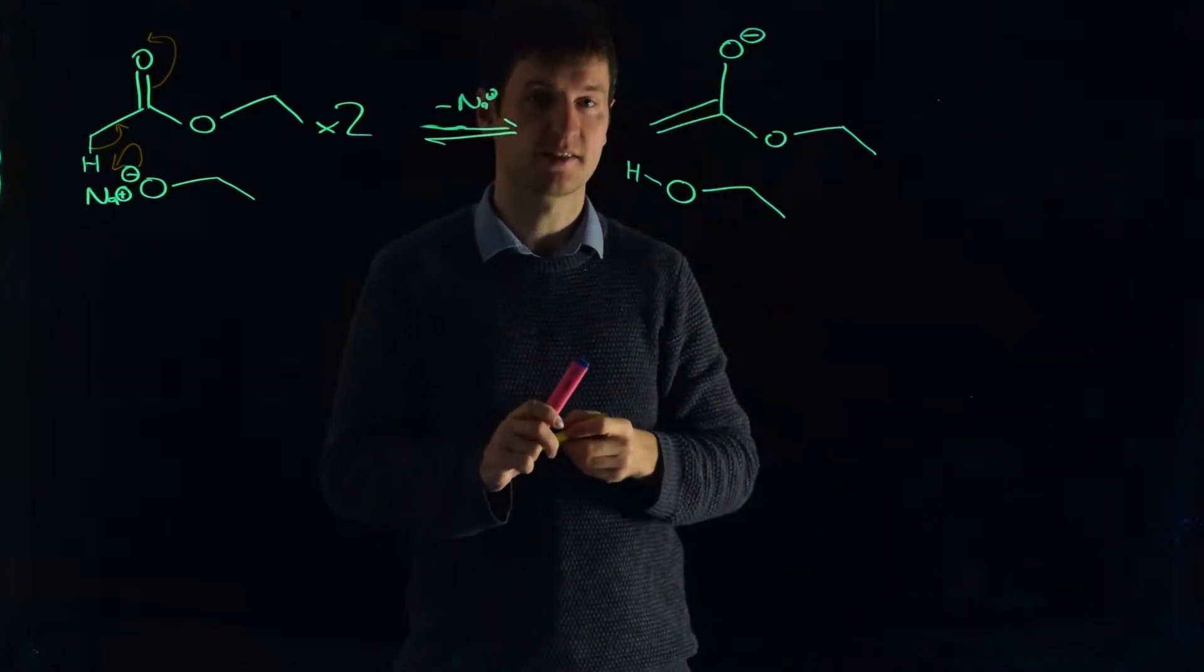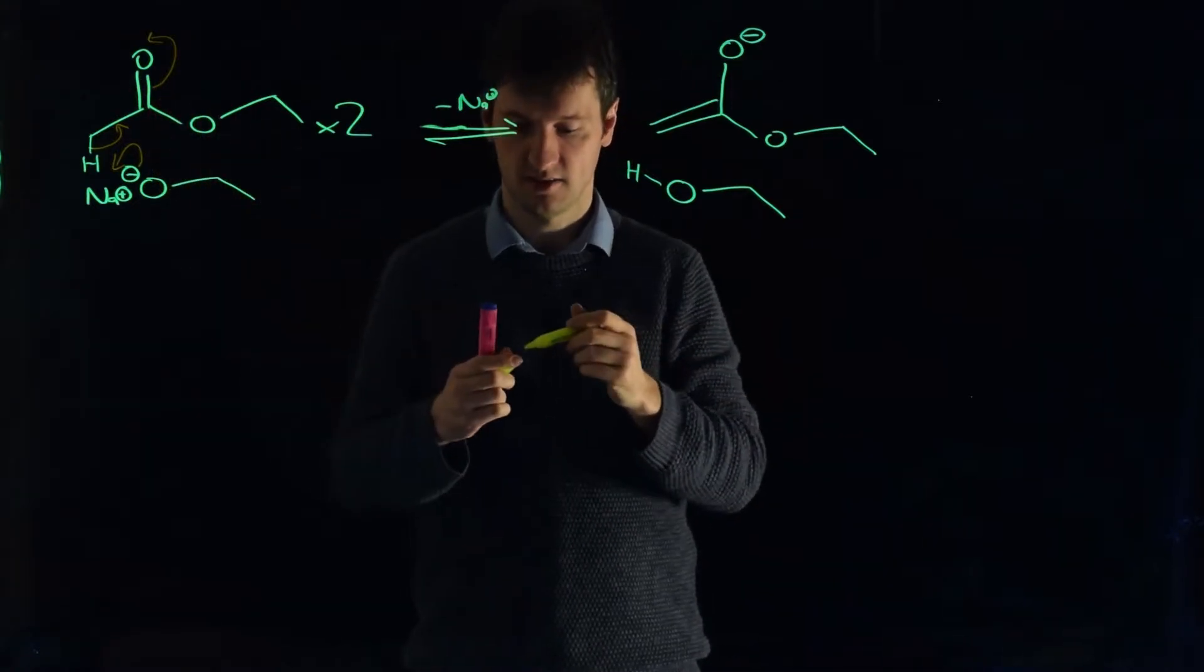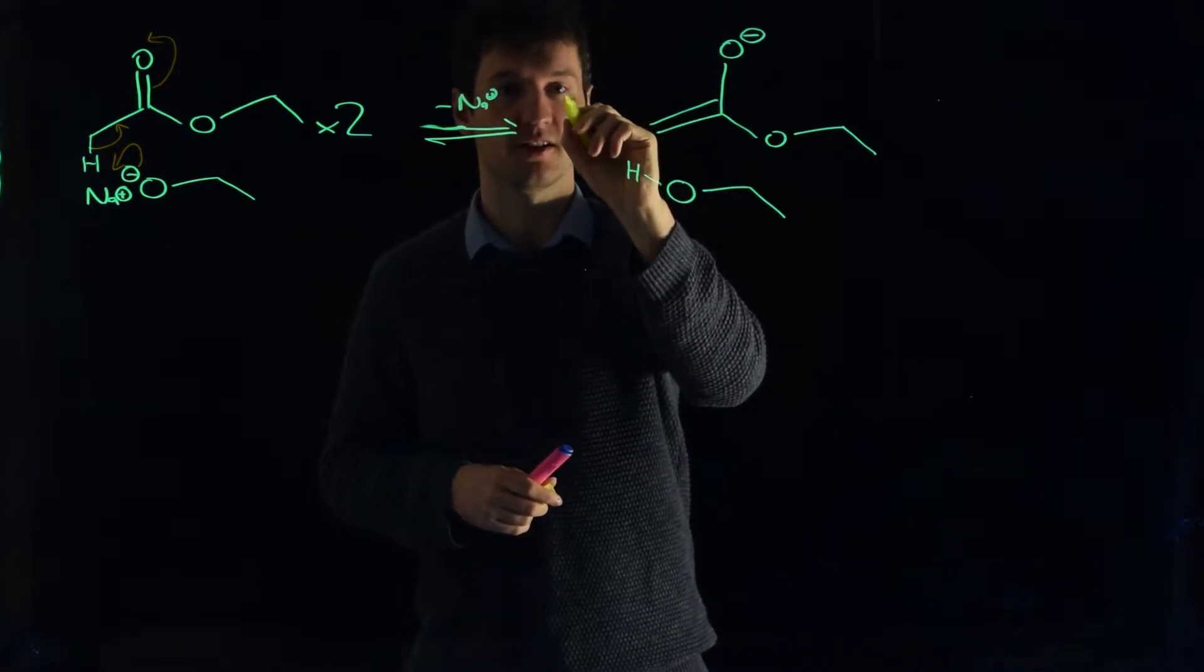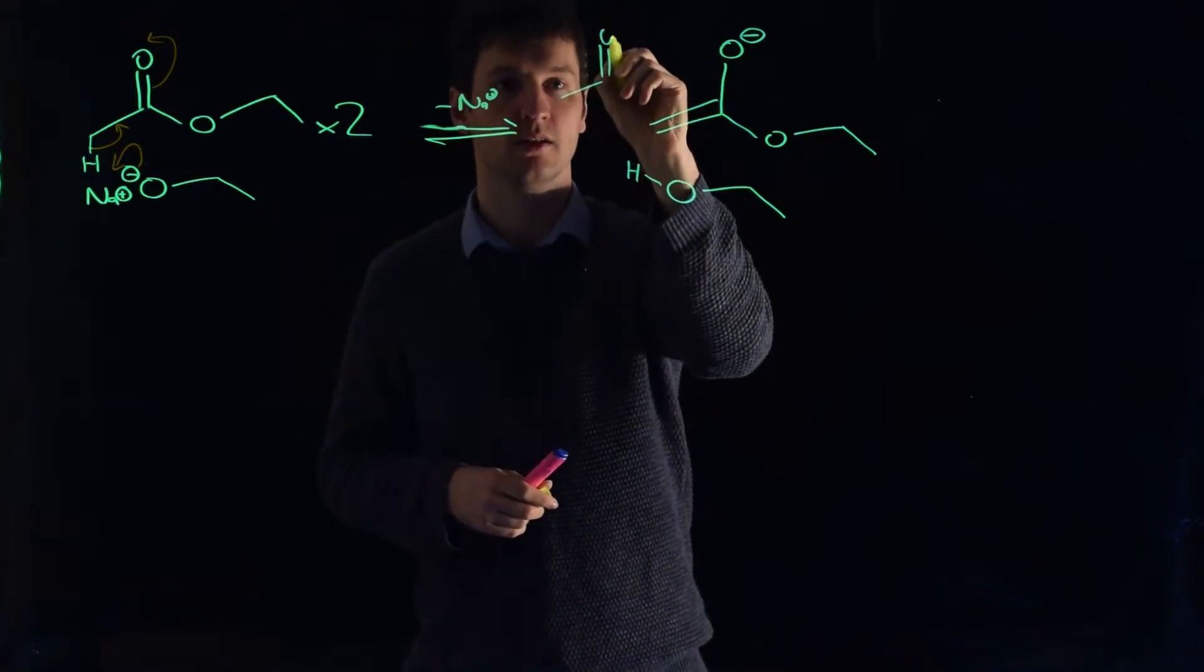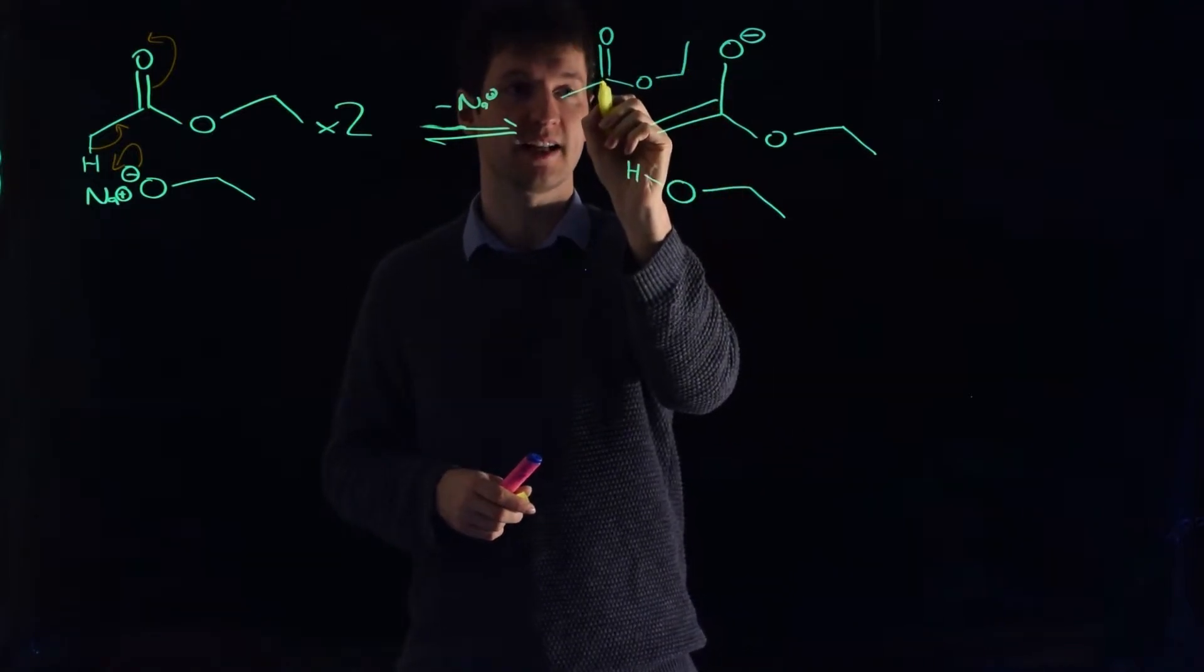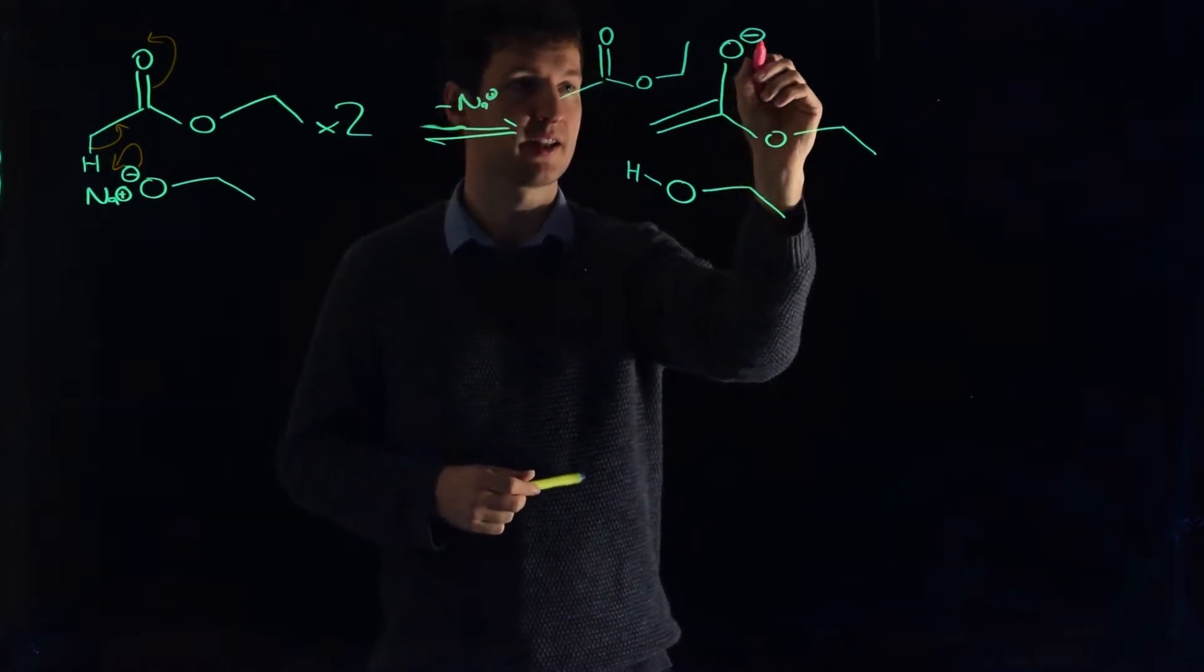And we know that enolates act as nucleophiles. So do we have an electrophile in this reaction? Well, I said that there were two esters in this. So let's redraw out our ester and see what's going to happen. We know that this is an electrophile, this is a nucleophile, so the two of them are going to react together.